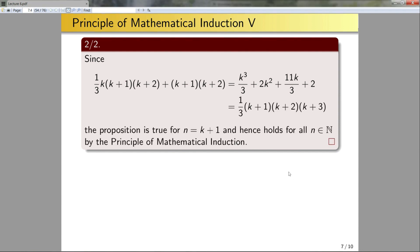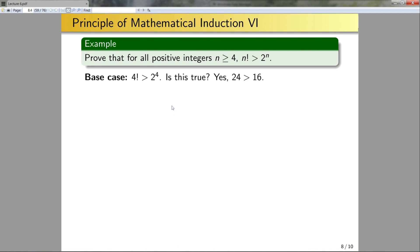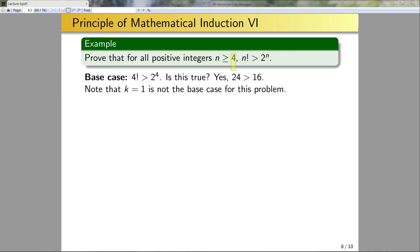Let's give one more example of mathematical induction. Prove that for all positive integers n ≥ 4, n! > 2^n. What is the base case? It will be that 4! > 2⁴. Is this true? Yes: 24 > 16. Notice that n = 1 is not the base case here — we're starting with 4. The principle of mathematical induction works as long as you start at some arbitrary integer and prove the statement for every integer greater than or equal to that starting point.